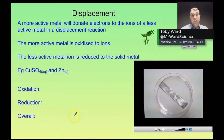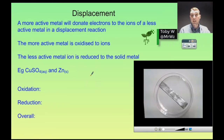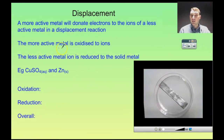Let's talk about displacement reactions. If you put a more active metal in a solution of a less active metal's ions, you get a displacement reaction occurring. The more active metal oxidizes to ions of that metal, and the less active metal's ions are reduced to that solid metal.